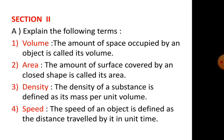Volume: the amount of space occupied by an object is called its volume. Area: the amount of surface covered by an enclosed shape is called its area. Density: the density of a substance is defined as its mass per unit volume. Speed: the speed of an object is defined as the distance travelled by it in unit time.